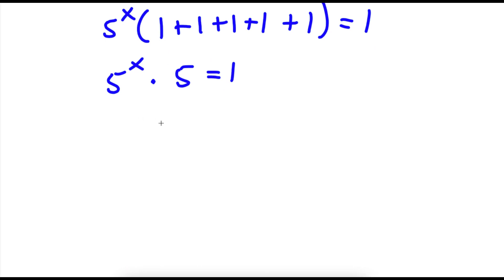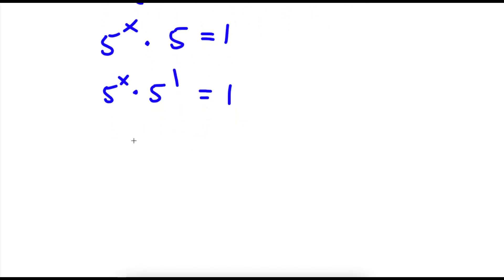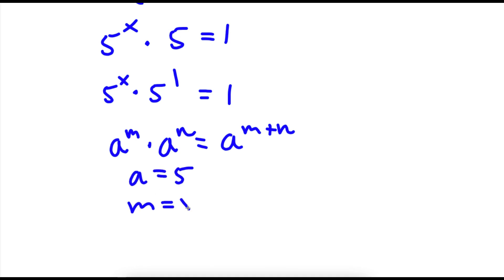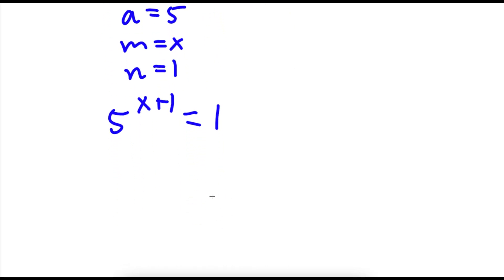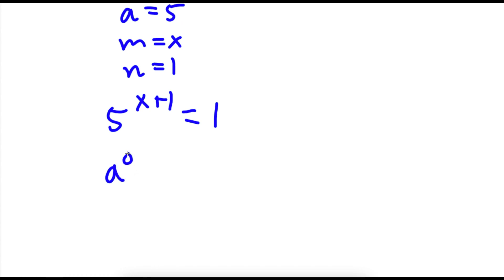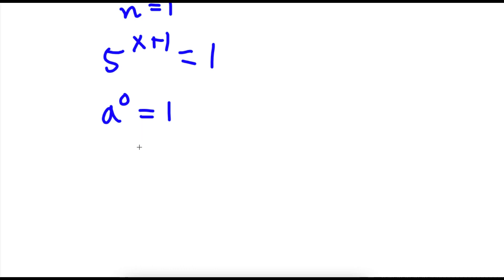Now, 5 to the power of x times 5 is equal to 1. Well, 5 is the same thing as 5 to the power of 1. So I have 5 to the power of x times 5 to the power of 1 is equal to 1. If I have a to the power of m times a to the power of n, this equals a to the power of m plus n. So now I have 5 to the power of x plus 1 is equal to 1. Now, any number to the power of 0 equals 1, besides 0.